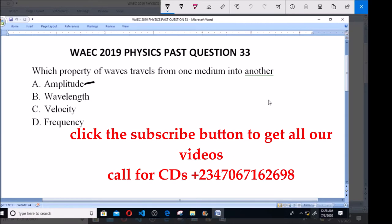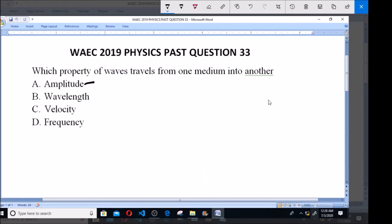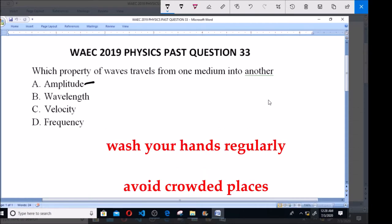Amplitude is the maximum displacement of a particle from its rest position. So whenever you talk about amplitude, we say it is the maximum displacement of a particle from its rest position.